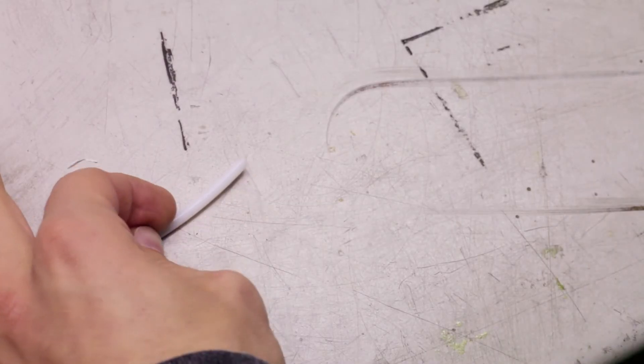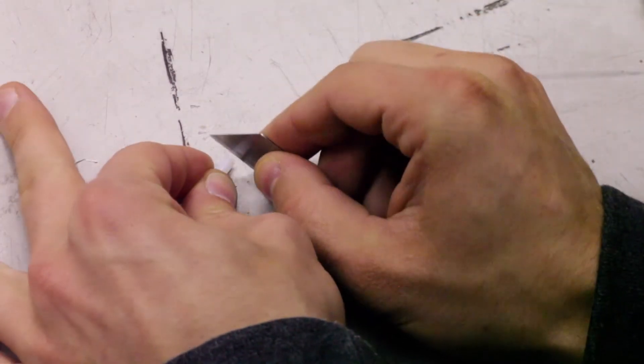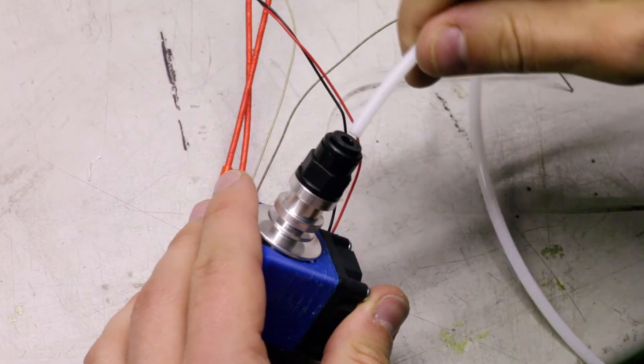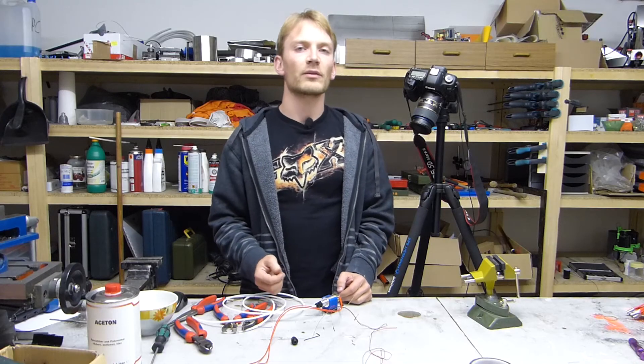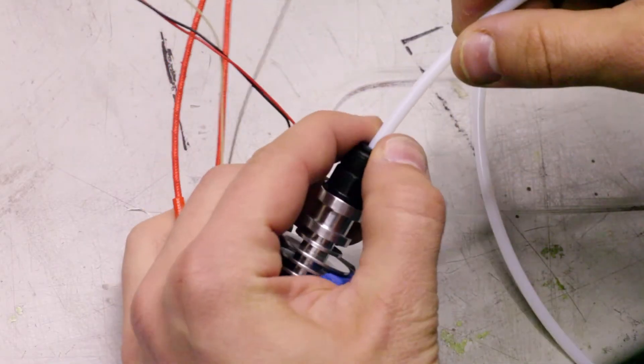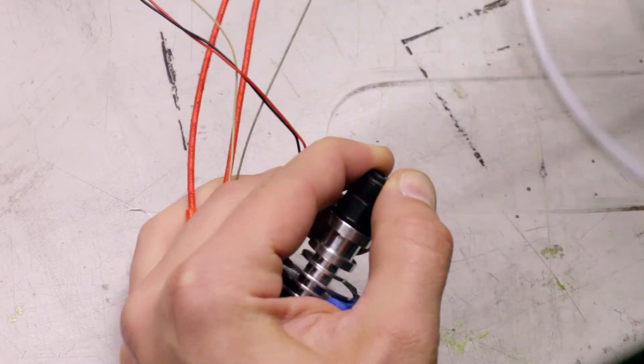Make sure that the Bowden tubing has a nice and straight cut on its end, then slide it into the hotend as far as you can. To release it, hold down the insert with one hand and pull the tubing out with the other.